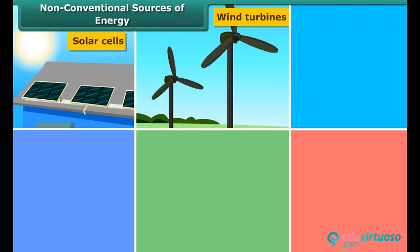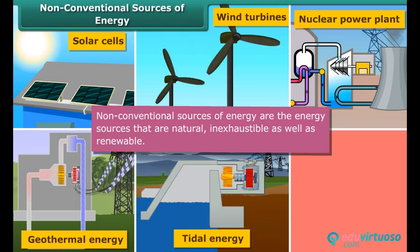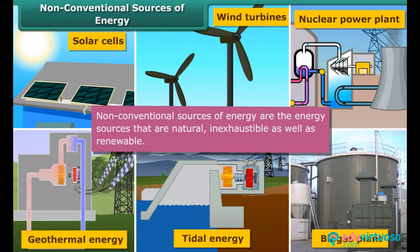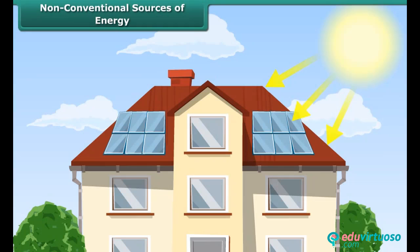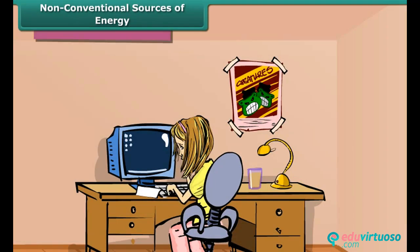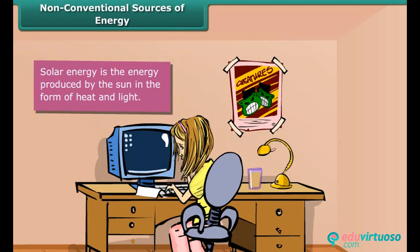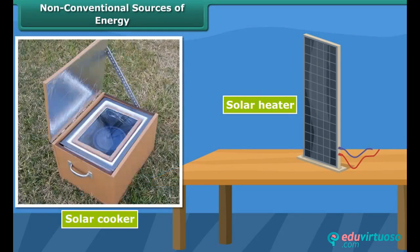Non-conventional sources of energy are the energy sources that are natural, inexhaustible as well as renewable. Solar energy, for example, is a non-conventional energy. Many solar cells are joined into solar panels to generate electricity. Solar energy is also used in solar heaters, solar cookers and solar dryers.